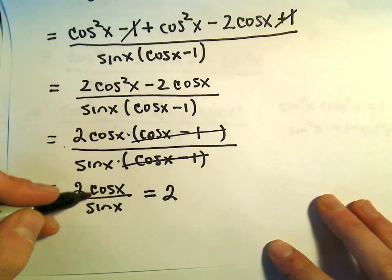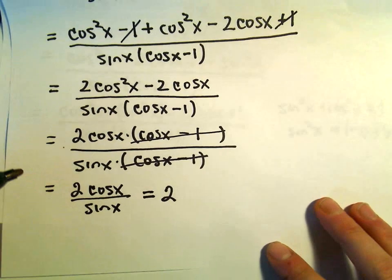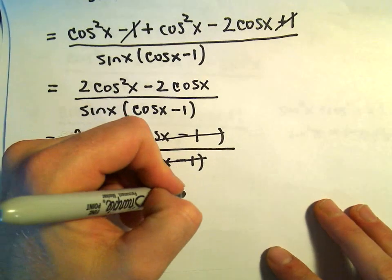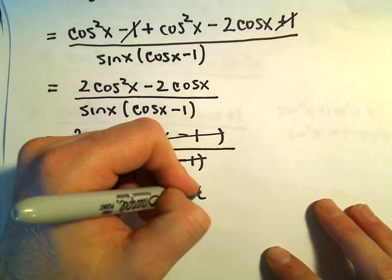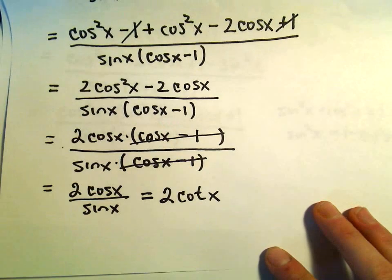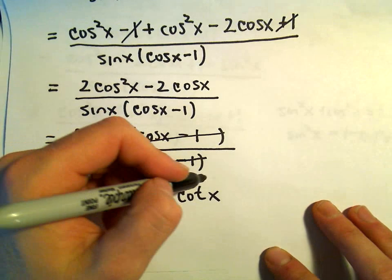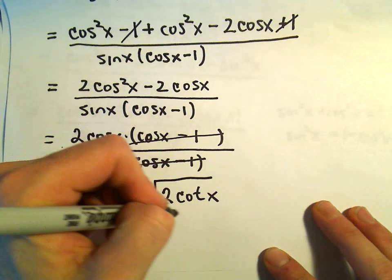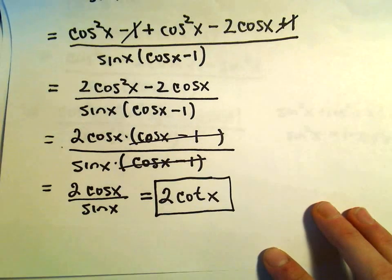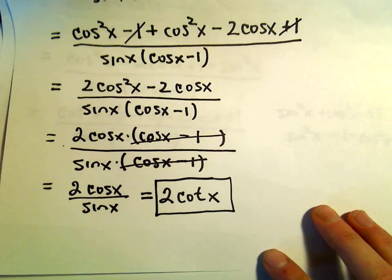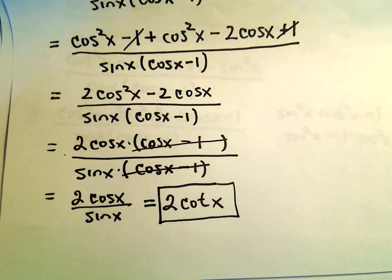Cosine x over sine x is the same thing as cotangent of x. So our final answer is 2 cotangent x, and I think I would call it a day — not much more that you can do there.